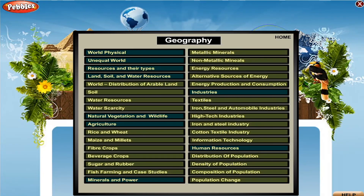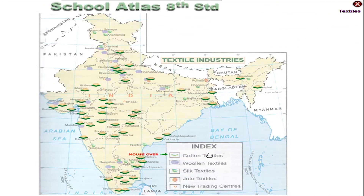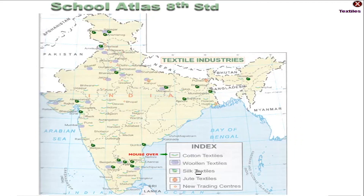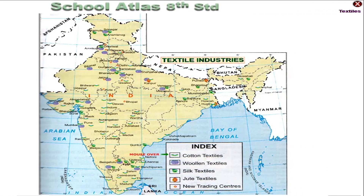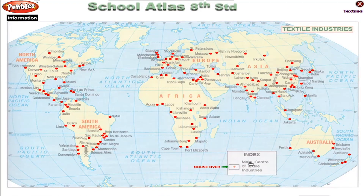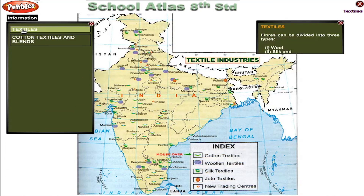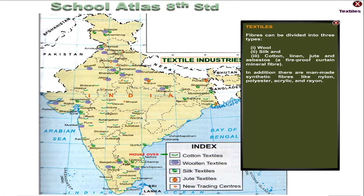Textiles. Fibres can be divided into three types: wool, silk and cotton, linen, jute and asbestos. Asbestos is a fireproof, mineral fibre.